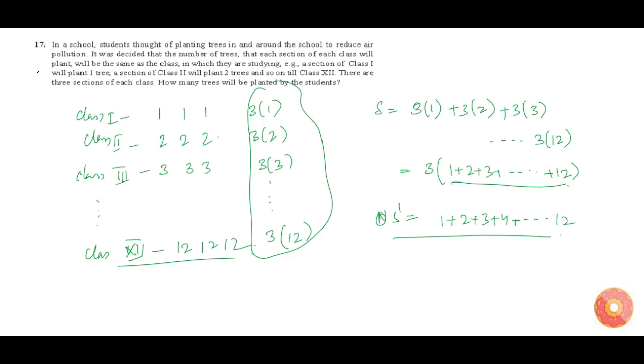Now this is nothing but sum of 12 natural numbers. The formula for finding sum of n natural numbers is S_n = n(n+1)/2. This is the formula for finding sum of n natural numbers.